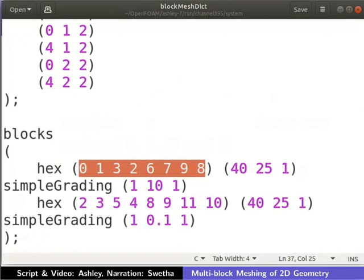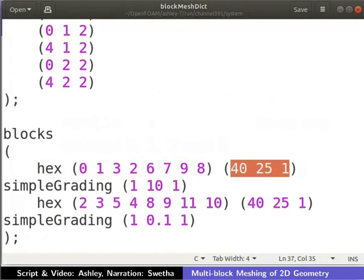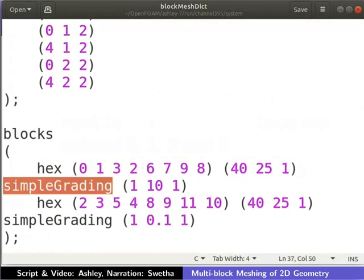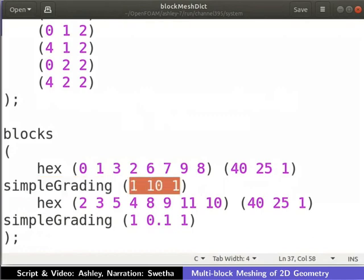The number of cells in each direction is defined as shown. There is only one cell in the z direction as this is a mesh for 2D simulation in xy plane. We use simple grading as the cells have uniform expansion in all directions. The ratio of width of the end cell to that of the start cell in a direction is its expansion ratio.